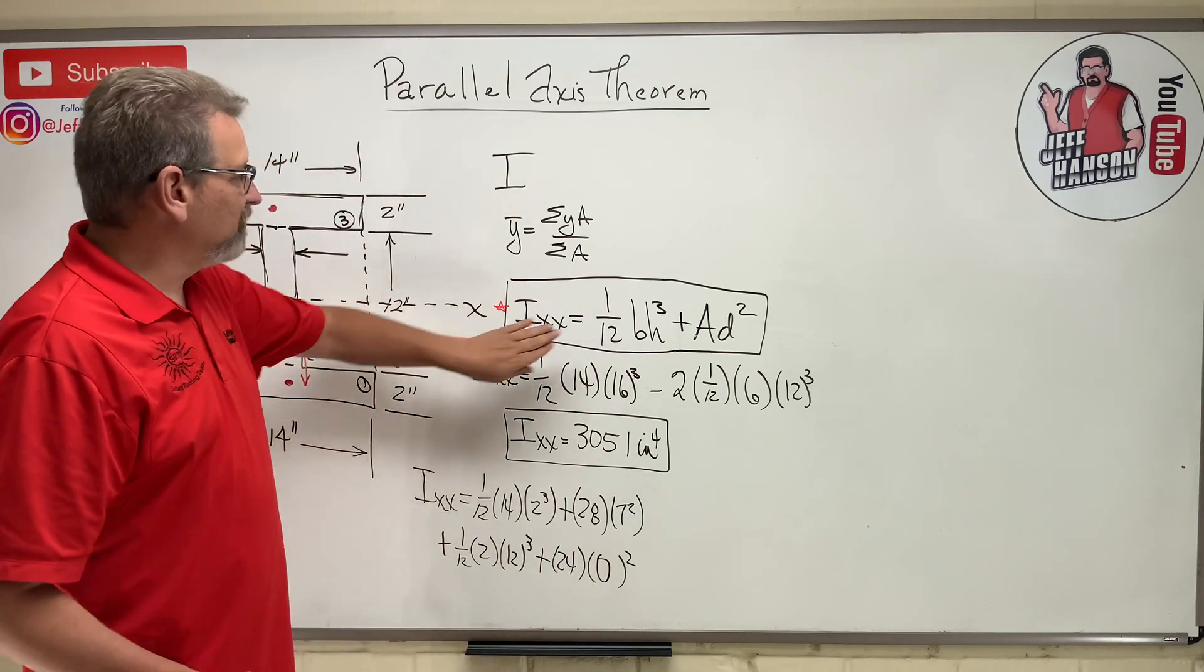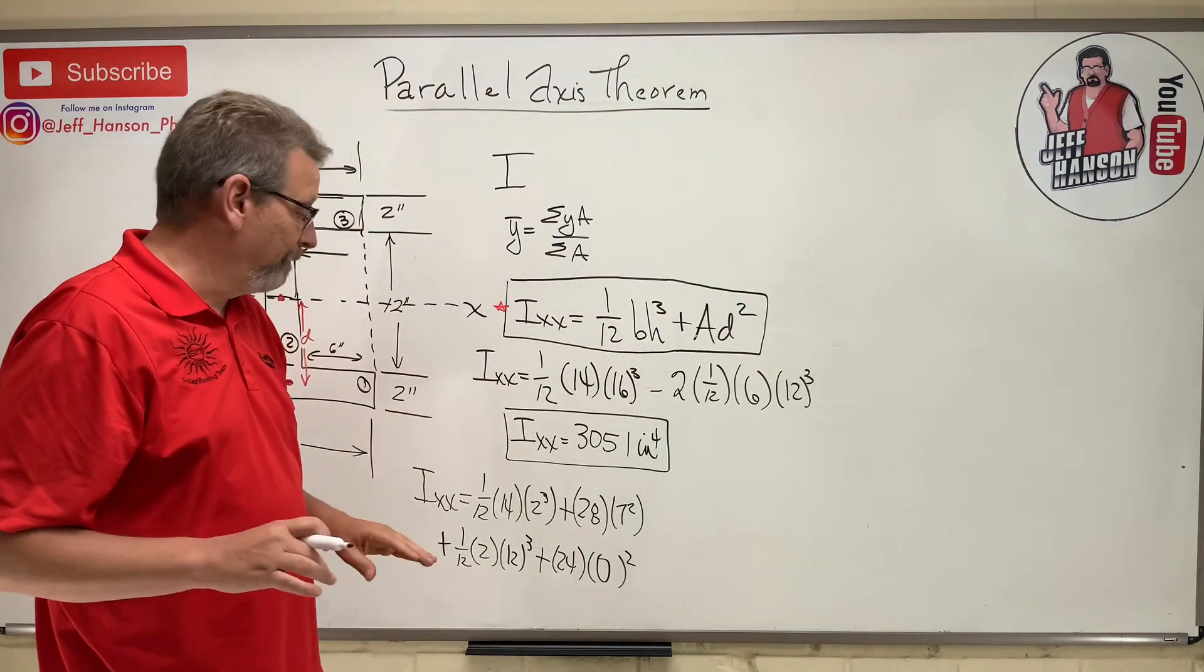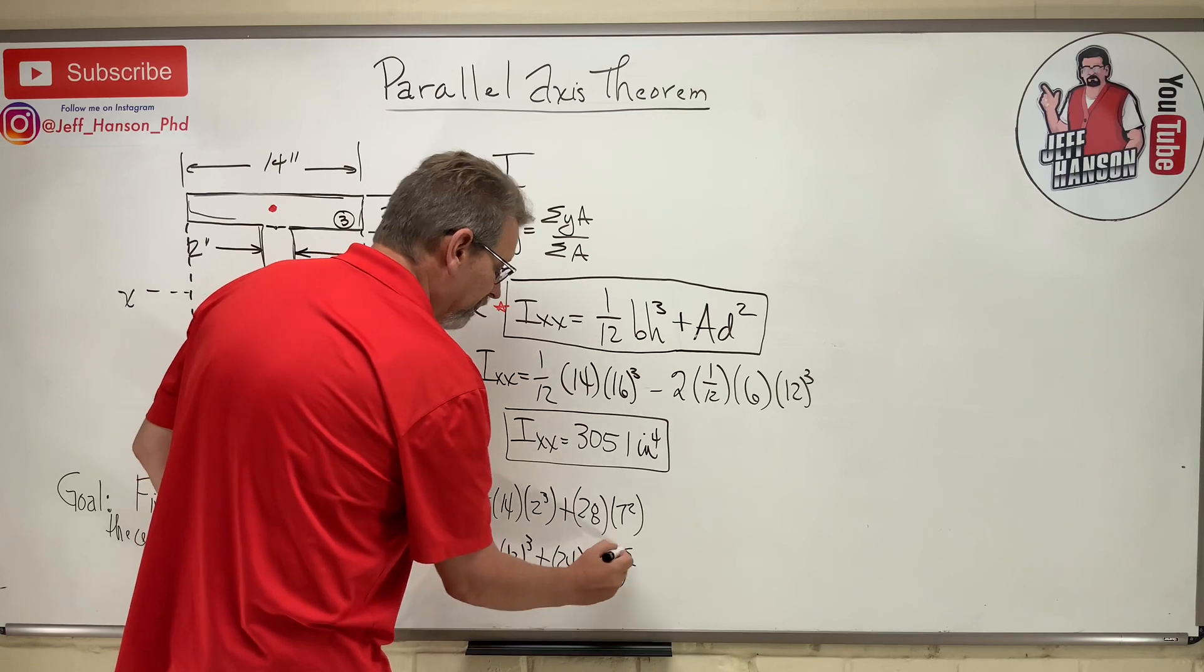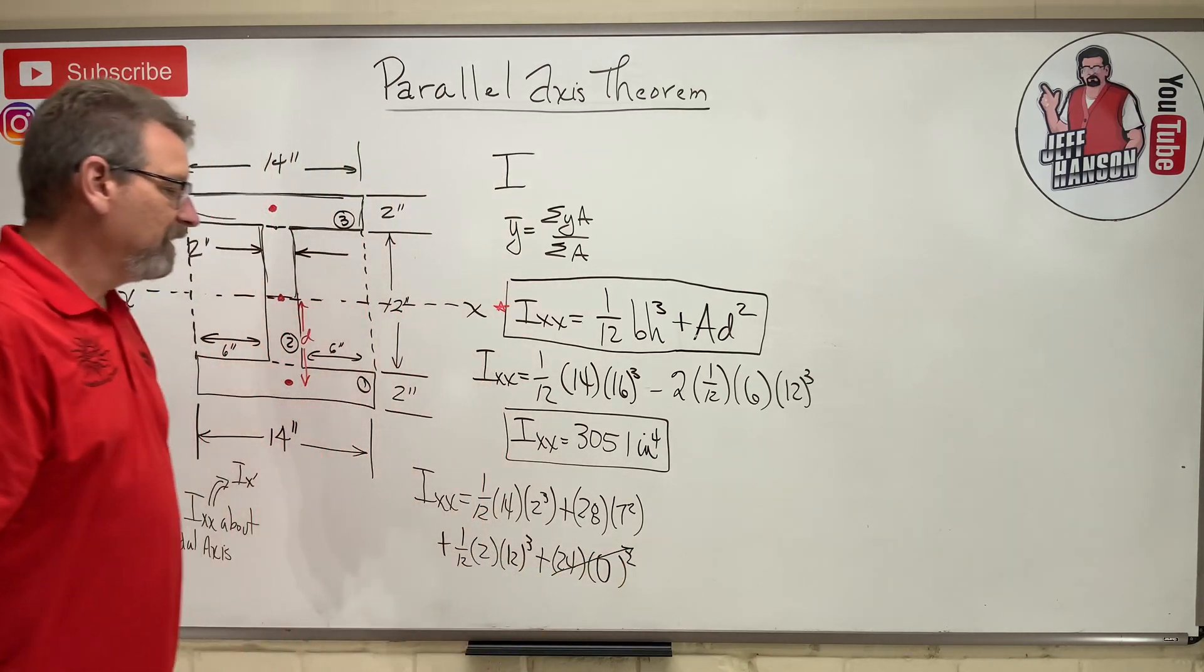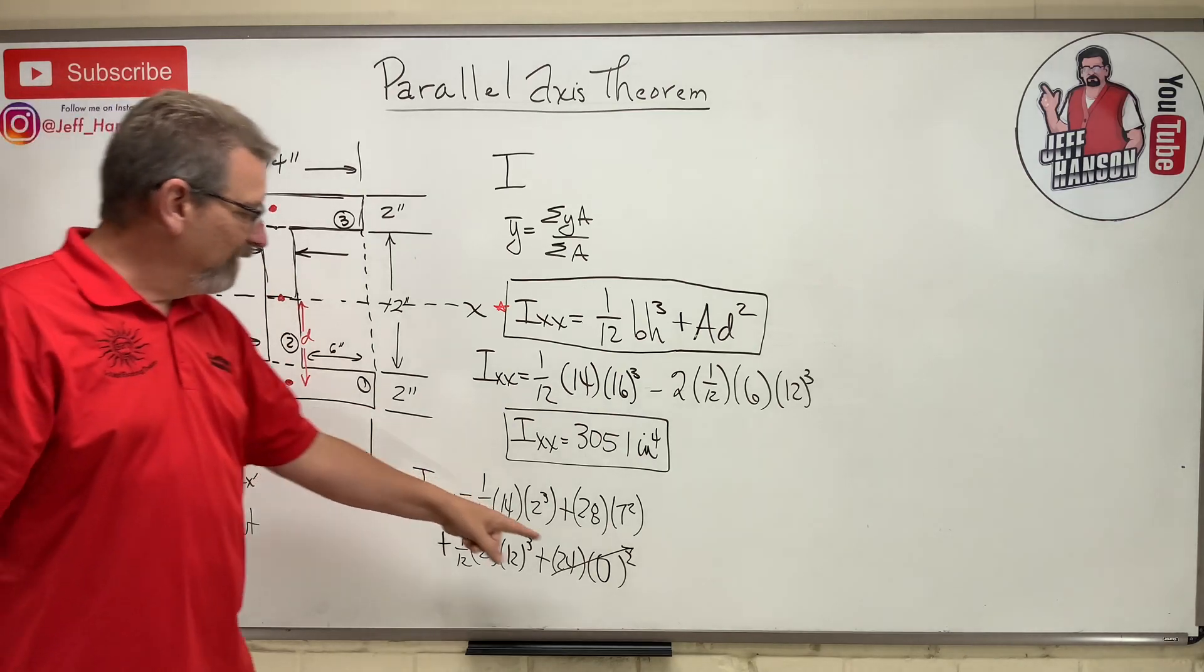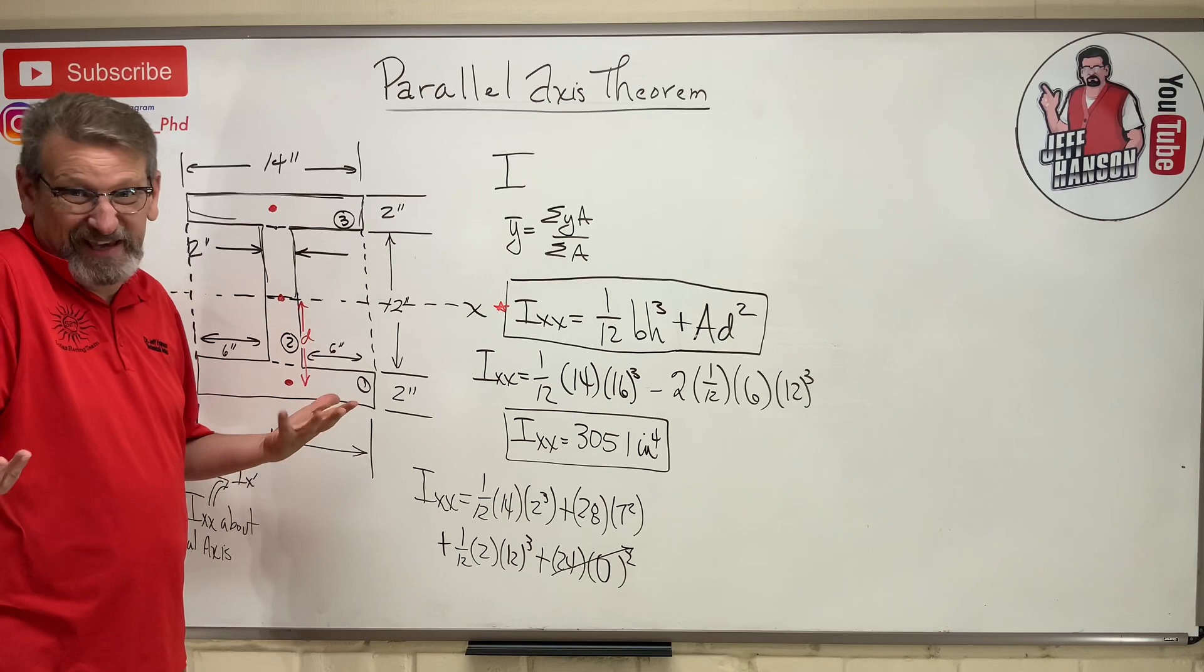So the distance is zero. So you see why this part over here works for when the neutral axis and the centroid are in the same place, because what happens to this whole back term anyway? It just goes away, doesn't it? So you can still use the parallel axis theorem every time, and when you get a zero, the parallel axis theorem part, the transform part, just goes away anyway. So that's cool.